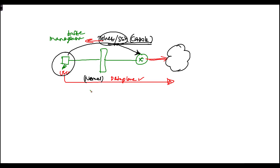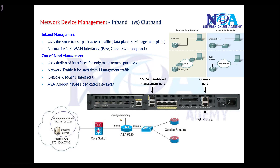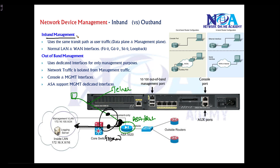In-band management means using the same transit path or the same interface for both data plane traffic and management traffic. For example, if I have a computer telneting to an ASA firewall or a router, that telnet is management traffic, and the same interface is also carrying traffic to the LAN. In-band management uses normal interfaces like LAN or WAN interfaces — Ethernet or serial — for both management and normal traffic.